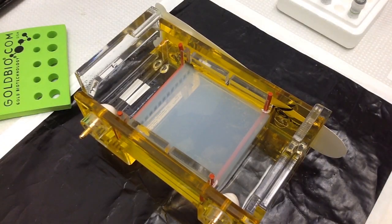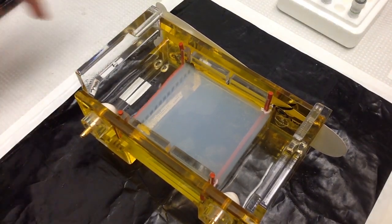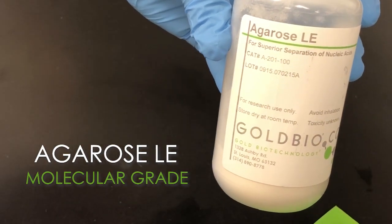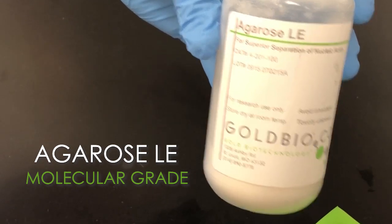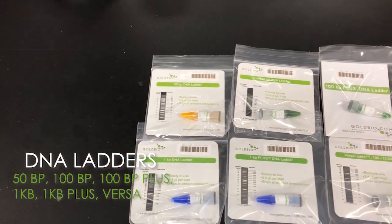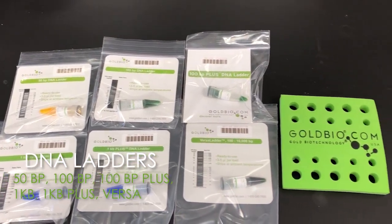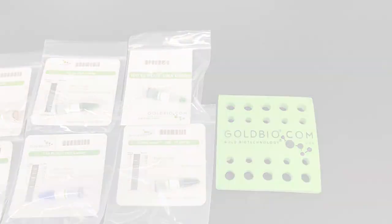Today I'm going to show you how I load a gel using our DNA ladders. I used our agarose LE to make the gels. The great thing about this gel is that it's versatile and can be used to separate nucleic acid but also in protein electrophoresis. Our ladders come ready to use. There's no diluting or loading dye necessary.